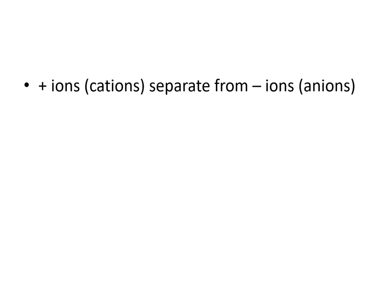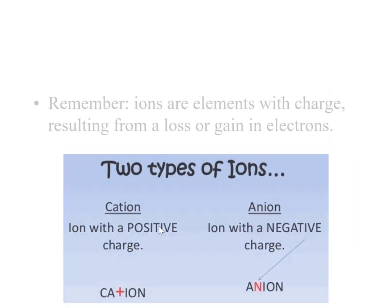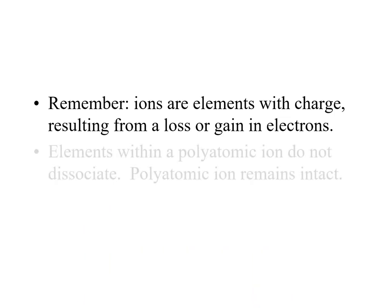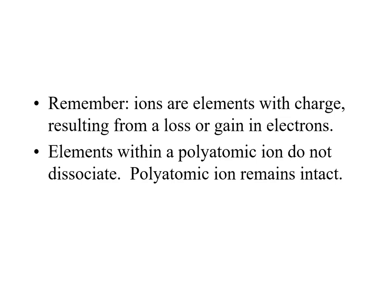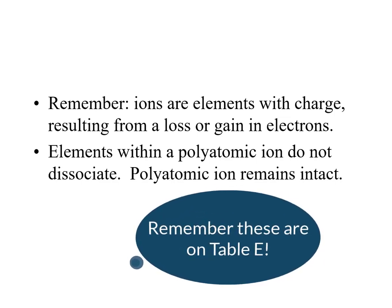Essentially what happens is our cations, or positive ions, separate from our anions, or negative ions. For example, sodium chloride put into water dissociates into sodium ions and chloride ions — happening on a submicroscopic molecular scale. Remember, ions are elements with a charge resulting from a loss or gain of electrons. Also, the elements within a polyatomic ion do not dissociate; polyatomic ions remain intact and act as a single unit.